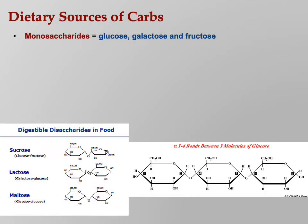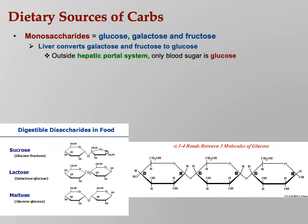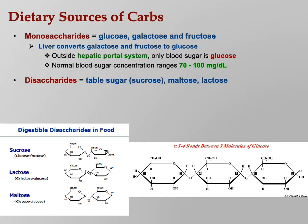Dietary carbs come from monosaccharides — glucose, galactose, and fructose. The liver converts galactose and fructose to glucose, so outside the hepatic portal system, the only blood sugar is glucose. That's why an IV drip only needs glucose. Normal blood sugar is 70 to 100 milligrams per deciliter. Low blood sugar is hypoglycemia; high blood sugar is hyperglycemia. Disaccharides include sucrose, maltose, and lactose. Polysaccharides include starch, glycogen, and cellulose. Nearly all dietary carbs come from plants.